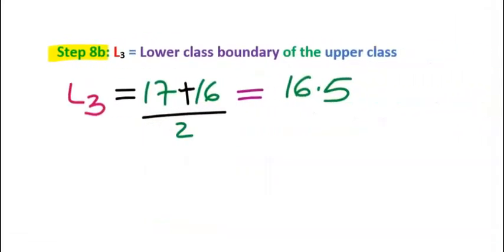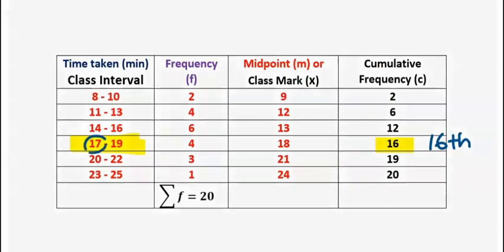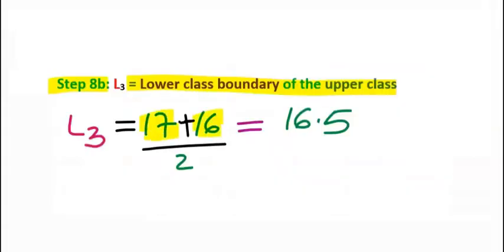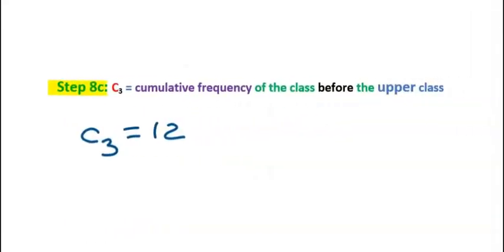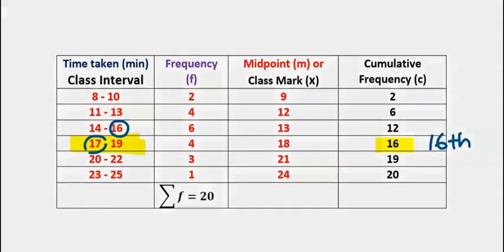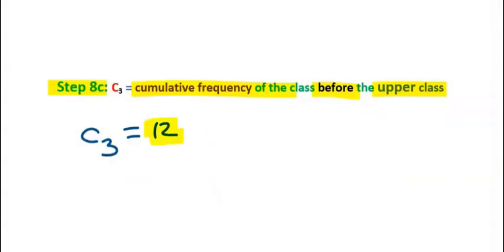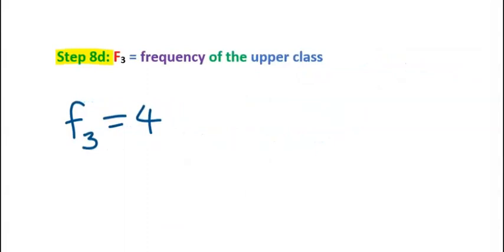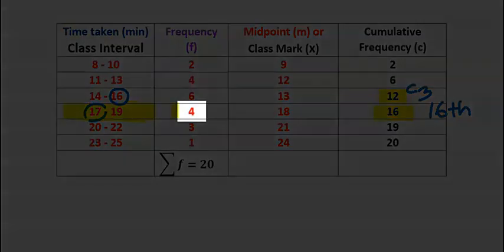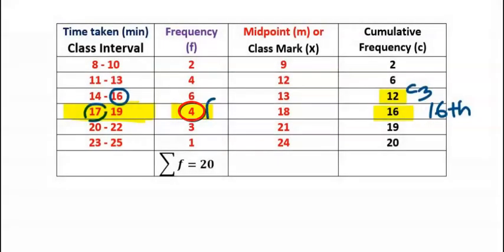Step 8B: find the lower class boundary of the upper class. From the table, we add 16 and 17 and divide by 2, giving L3 as 16.5. Step 8C: the cumulative frequency before the upper class is 12, so C3 is 12. Step 8D: find the frequency of the upper class, which is 4. Hence, 4 becomes our F3.